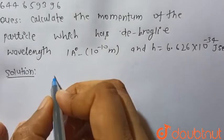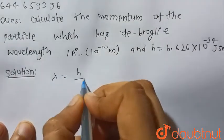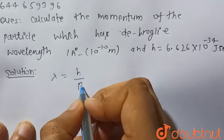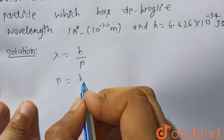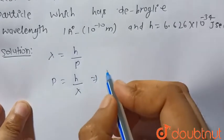So we know that de Broglie wavelength is given by lambda equals h upon p, where h is the Planck constant and p is the momentum. So we have to find the momentum, so p will be equal to h upon lambda, where h is the Planck constant.